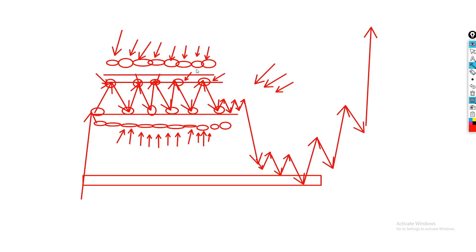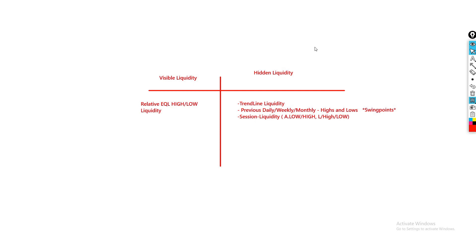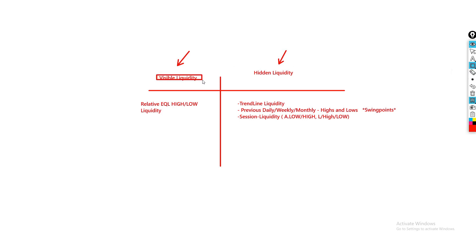Now that's the explanation of what liquidity is. What you need to understand is that liquidity is the reason why price actually moves, and the algorithm is going to target those liquidity pools or liquidity areas just as explained in that example. Now I'm going to move on to the different types of liquidity — I will show chart examples — and I've separated them into two sections: visible liquidity and hidden liquidity.